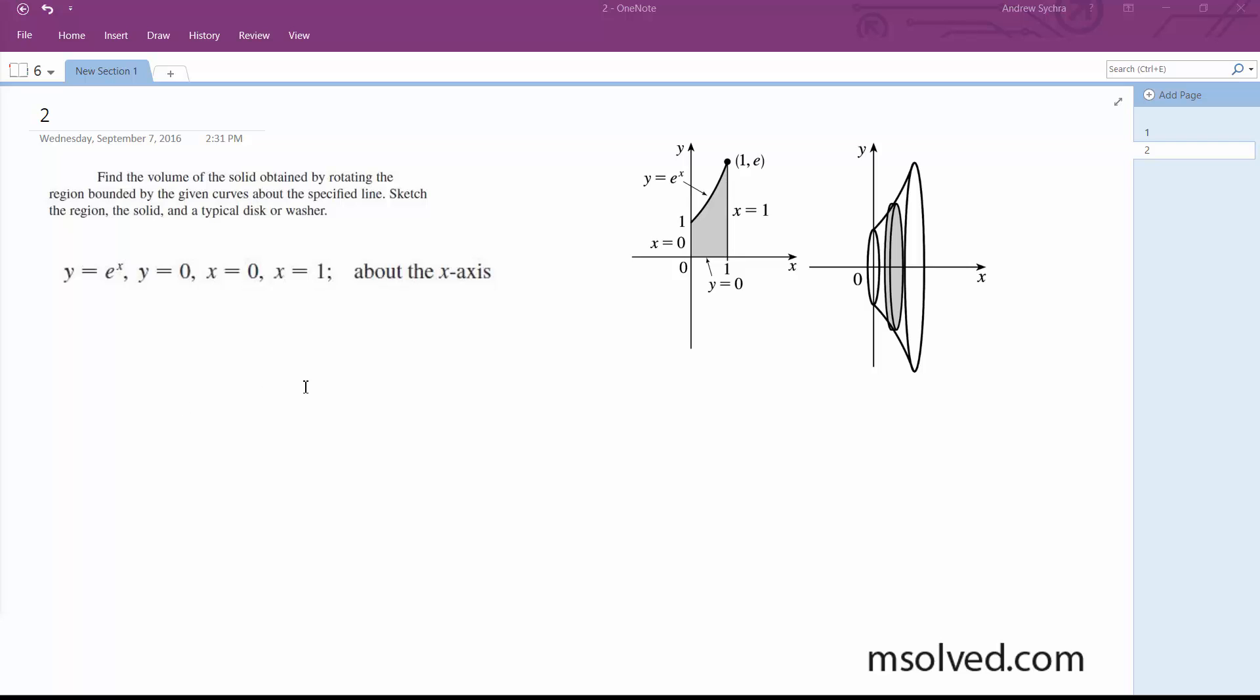We're going to find the volume obtained with these constraints. Our graph is y equals e to the x, constrained by the x-axis and y-axis.